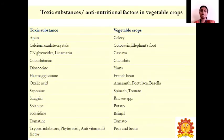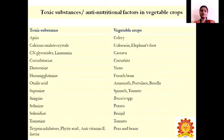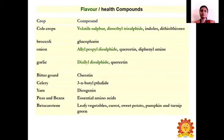Regarding toxins and anti-nutritional factors in vegetable crops: solanine is the toxic substance present in potato. Calcium oxalate crystals are present in colocasia and elephant foot yam, causing itchiness when handling. CN glycosides and linamarin are present in cassava. Cucurbitacins are present in cucurbits. Dioscorin is present in yams. Hemagglutinin is present in French beans. Oxalic acid is present in amaranthus and purslane. Saponin is present in spinach and tomato. Solanine is present in potato and solanine is present in brinjal. Tomatine is present in tomato. Other anti-nutritional factors include trypsin inhibitors, phytic acid, and antinutrients present in peas and leaves.